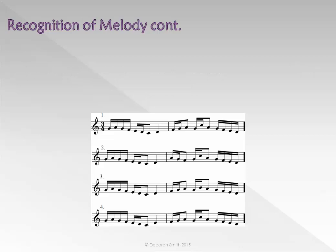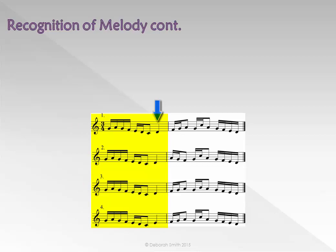In other words, have a look at the first bar. The first bar is the same for 1, 2, 3 and 4, up until the last beat. The last beat of 1, 2, 3 is Ray, or Dee.